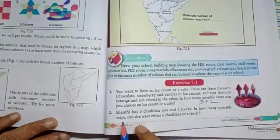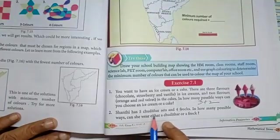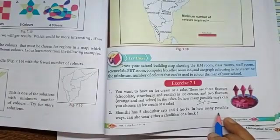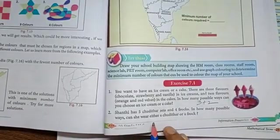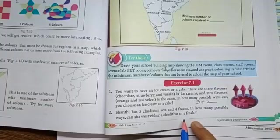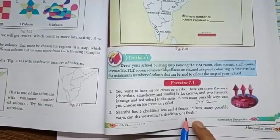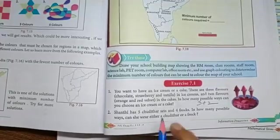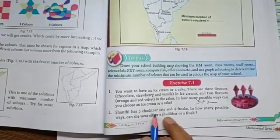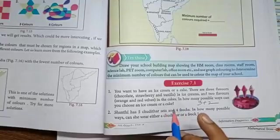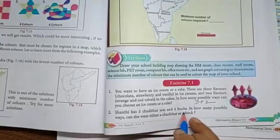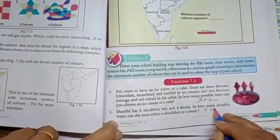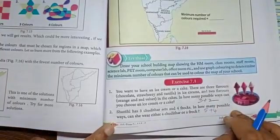Next, second one. Shanti has 5 churidhar sets and 4 frocks. In how many possible ways can she wear either churidhar or a frock? Shanti has 5 churidhar. She wear either churidhar sets or frock. So, total possible ways, 5 plus 4, 9 ways.